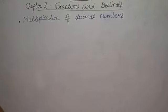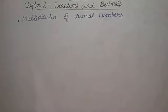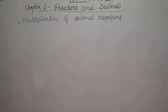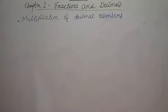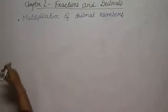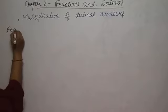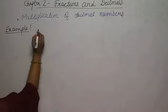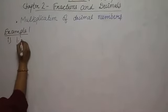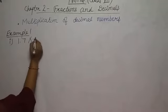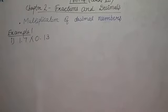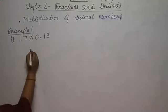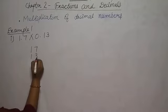According to your book, page number 47, I am taking Example number 1, part number 1. It is 1.7 multiplied by 0.13. You all know how to do multiplication — just ignore the decimals first and do the multiplication: 17 multiplied by 13.